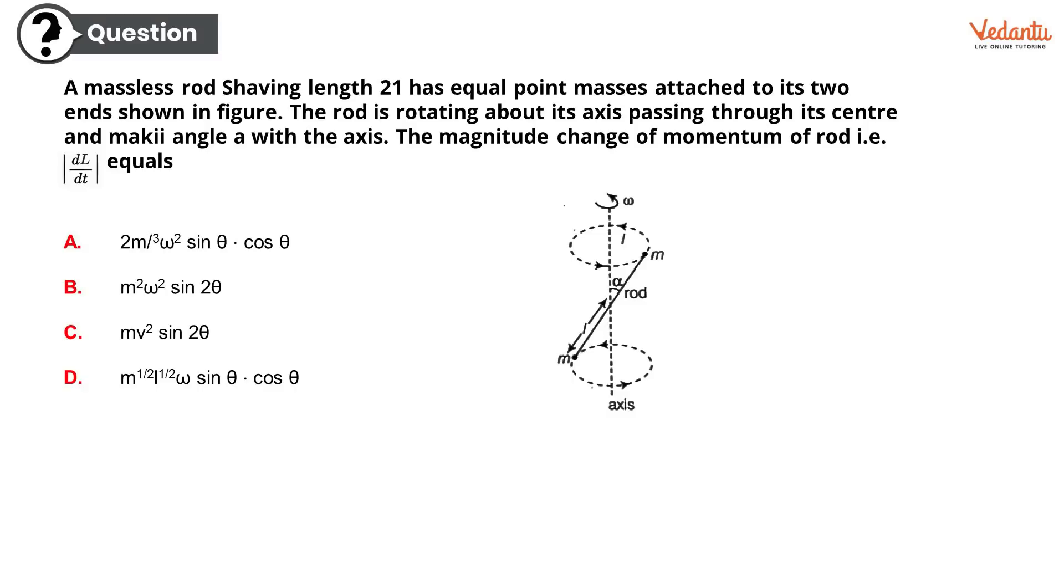A massless rod having length 2l has equal point masses attached to its two ends shown in the figure. The figure itself looks very complicated. The rod is rotating about its axis passing through its center and makes an angle with the axis. The magnitude change of momentum of rod, that is dL upon dt equals: option A 2m³ω² sin θ cos θ, option B m²ω² sin 2θ, option C mv² sin 2θ, or option D m^(1/2) l^(1/2) ω sin θ cos θ.